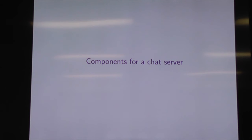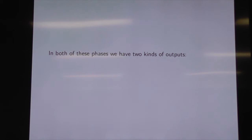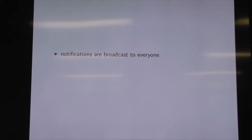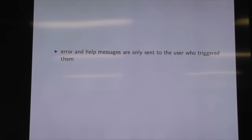We had an echo program and we're okay with that. Now we're going to start moving towards a chat server. By the end of part two, we'll have a proper chat server with at least feature parity with the one from Parallel and Concurrent Haskell, plus some extra features. With our chat server, we initially prompt the user for a nickname. Once they've given us a valid nickname, we start processing commands — they can send messages, private messages, kick people, and quit. In both phases, there are two kinds of outputs: notifications that go to everyone, and error or help messages that go only to the user interacting.